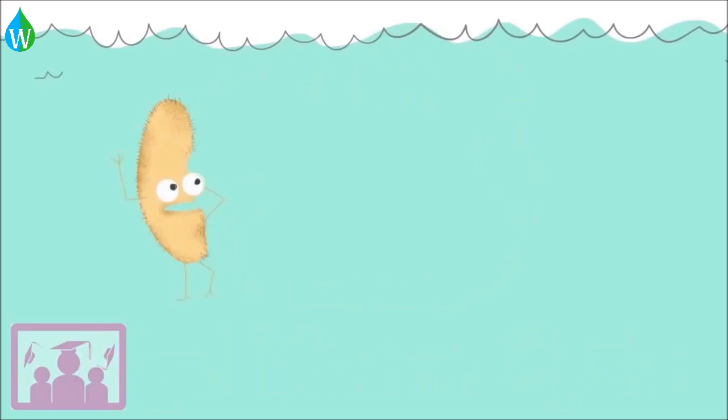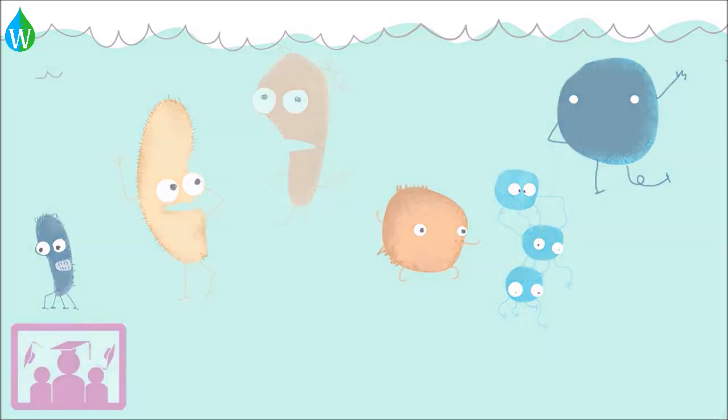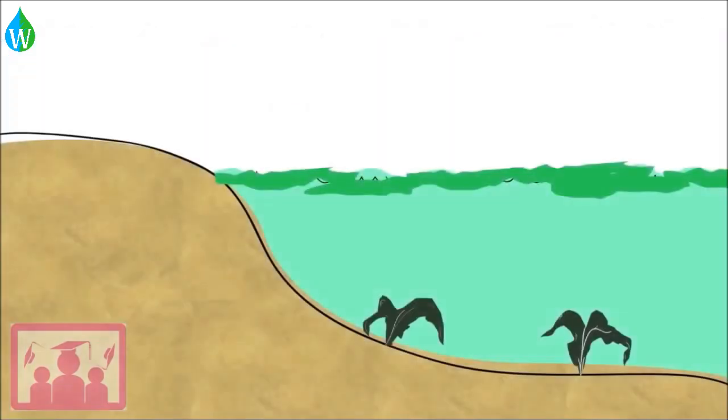The bacteria, with a continuing supply of food, reproduce into much larger numbers, consuming oxygen as they grow and respire. There's not much oxygen in the water to begin with, so when the bacteria consume it quickly, it might run out completely.